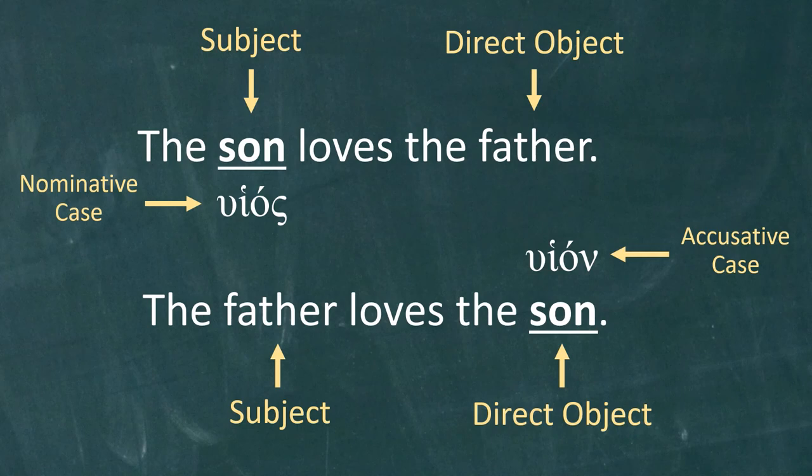Note that huios is the form that you memorized in your vocabulary list. The lexical form of a noun is always in the nominative case. In other words, the form of a noun that is listed in a dictionary or a vocabulary list is always in the nominative case.